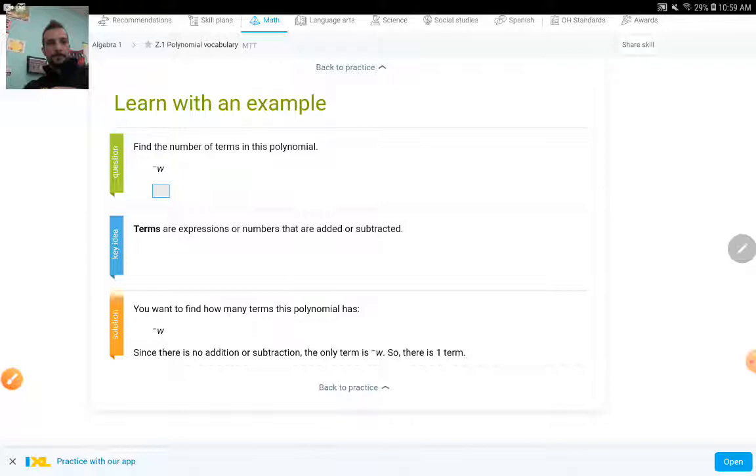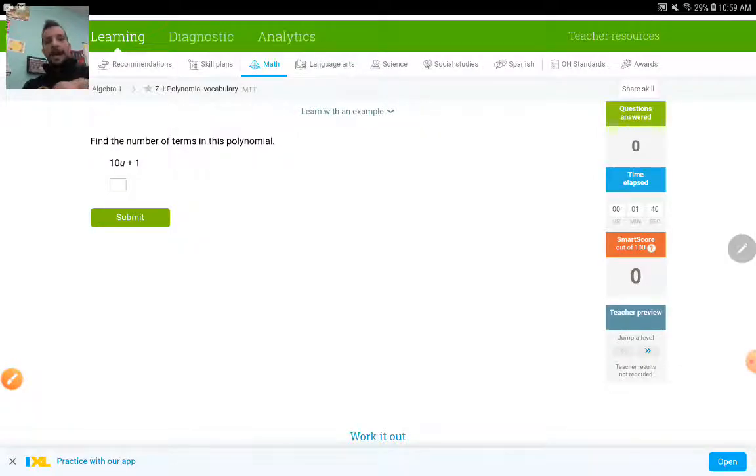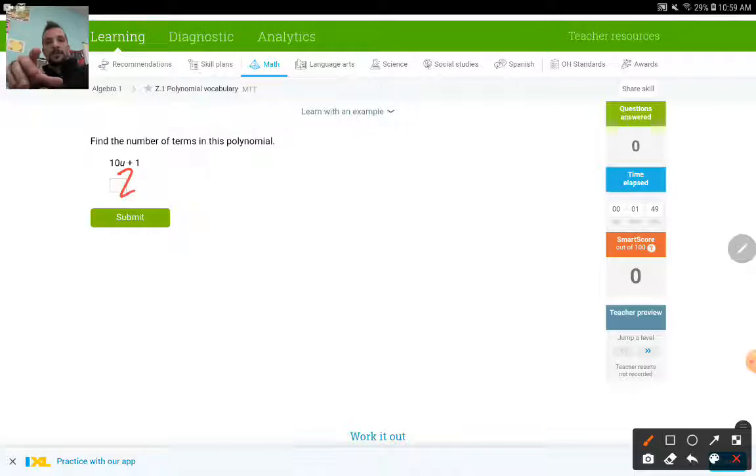Now, back to our question. I have 10U. That's the first expression. And then I have a number, one. Both of these added together. So I have two terms in here.